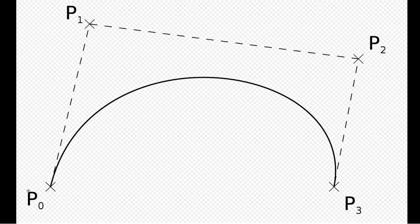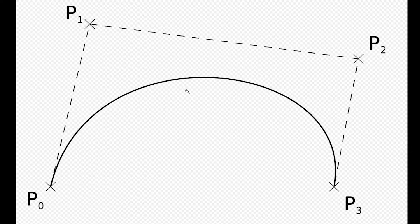Basically, Bézier curves are just curves made based on control points, and the curve doesn't necessarily cross these control points — as you can see here, point one and point two just influence the behavior of the curve. So if you want the curve to trend towards a certain direction, you add control points in that direction.